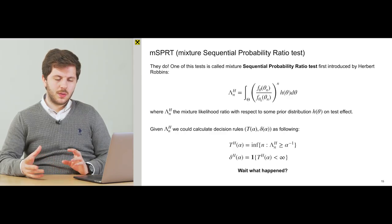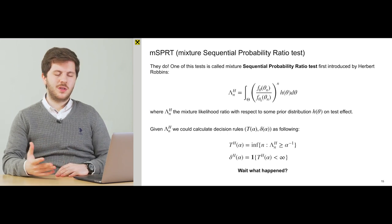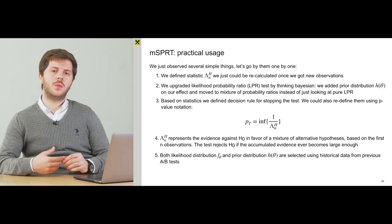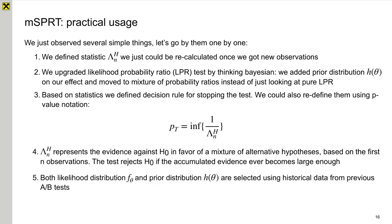And you could just say wait, what happened? What did you just tell us? We just observed simple things and let's go through them one by one. We defined some statistics, some value that we could recalculate once we got a new observation. How can we do that? So we upgraded the likelihood probability ratio test by thinking Bayesian. We added a prior distribution on the effect and moved to some probability mixture of probability distributions instead of just looking at and using simple likelihood probability ratio testing.